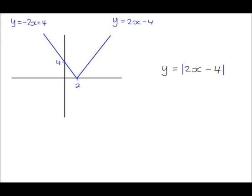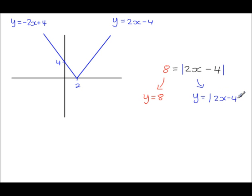So let's say we're trying to solve the equation: the modulus of 2x minus 4 is equal to 8. From the right-hand side we have the graph y equals the modulus of 2x minus 4, which we already have on our sketch. Now we add y equals 8, which is just a horizontal line going through y equals 8.